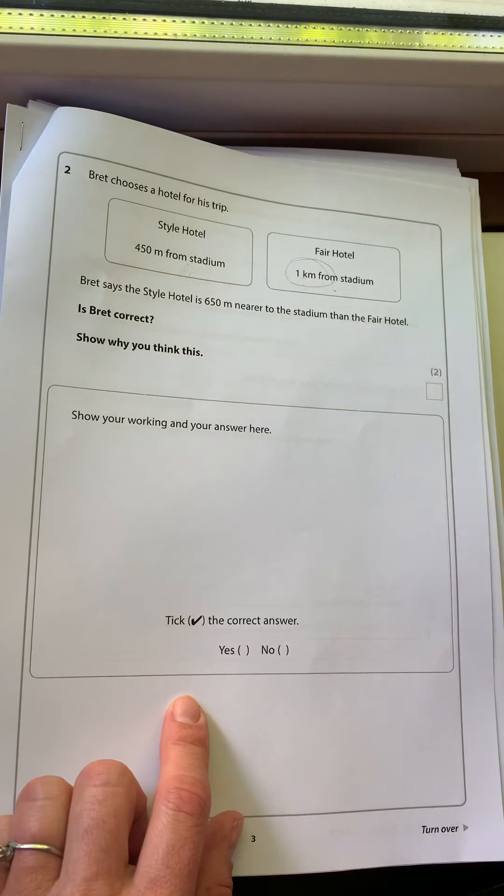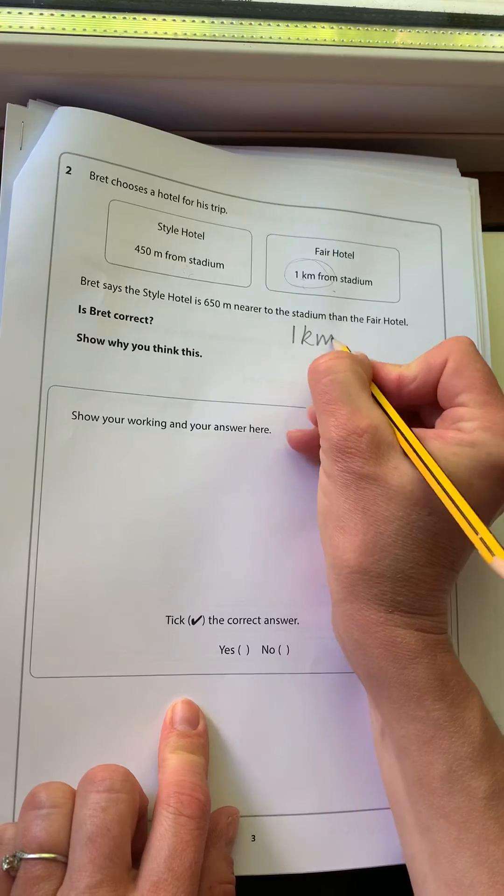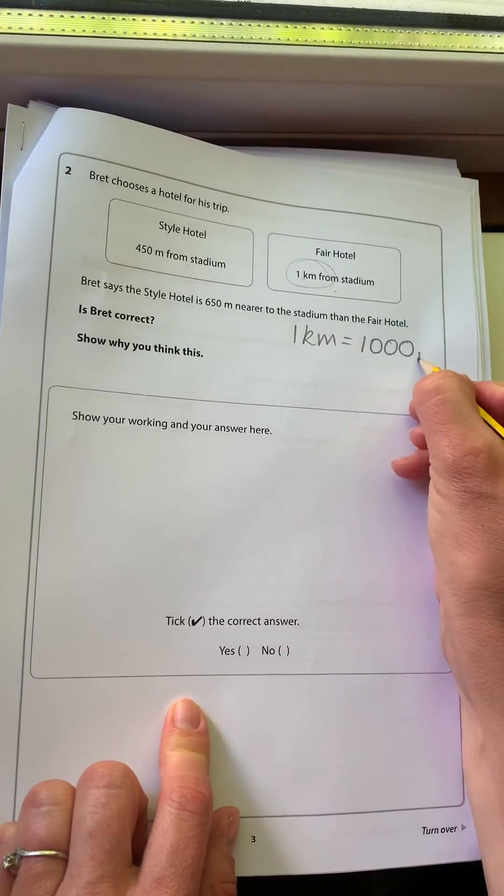So hopefully you know, and if you don't, try to remember that one kilometre is the same as 1000 metres.